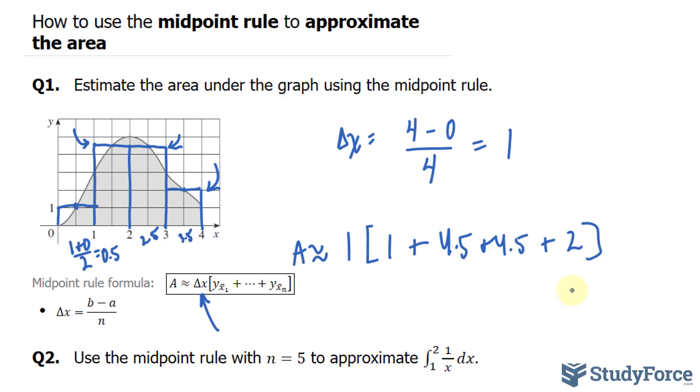Therefore, the area of this shape, according to the midpoint rule, is 1 plus 4.5 plus 4.5 plus 2. That's equal to 12 units squared.